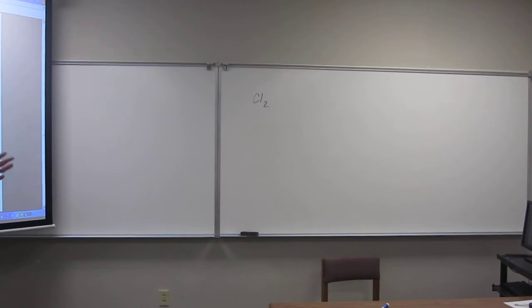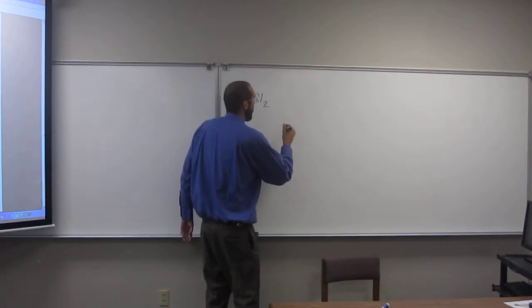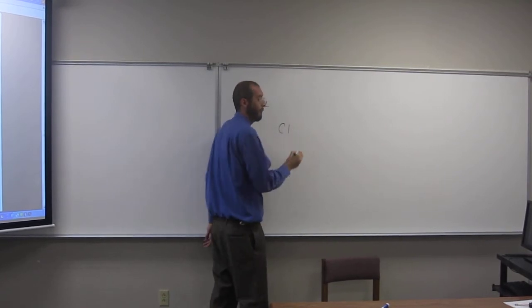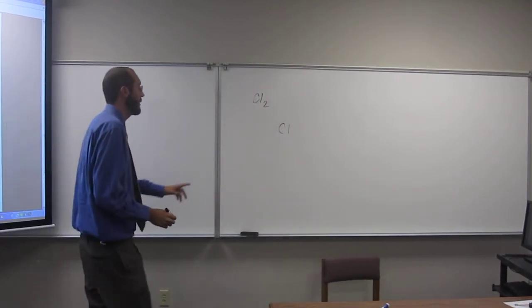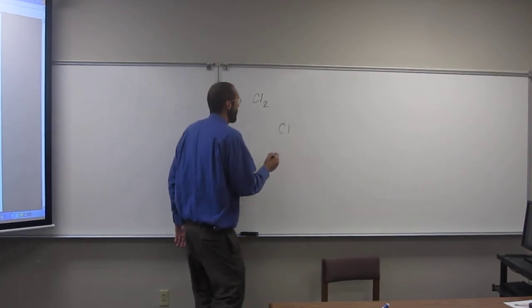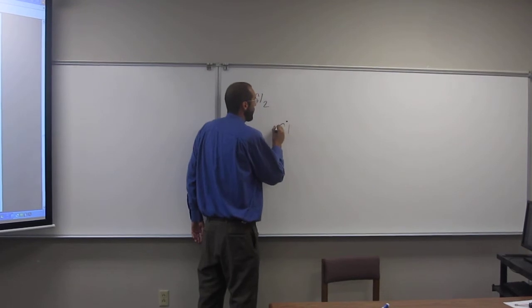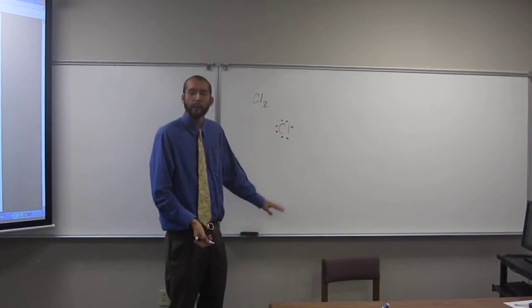How many electrons in its outer shell, right? So how do we show that? We normally have written the atomic symbol there and then put dots around it to show how many valence electrons. So let's do that. One, two, how many does it have? Seven. Four, five, six, seven. So seven like that.